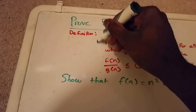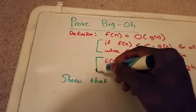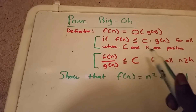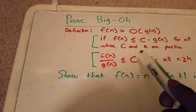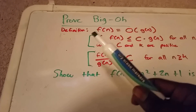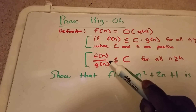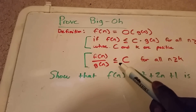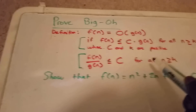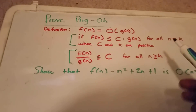We can rewrite this equation such that f of n belongs to Big O of g of n, if f of n divided by g of n is less than or equal to some constant, for all n greater than or equal to k.